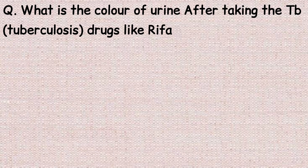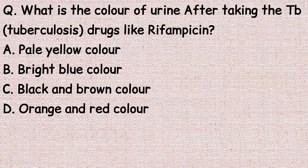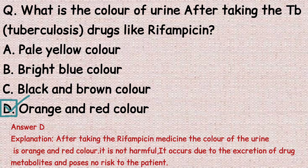The next question: what is the color of urine after taking the TB drug rifampicin? Option A: pale yellow. Option B: bright blue. Option C: black and brown. Option D: orange and red. The correct answer is option D, orange and red. This is not harmful; it occurs due to excretion of drug metabolites and poses no risk to the patient.